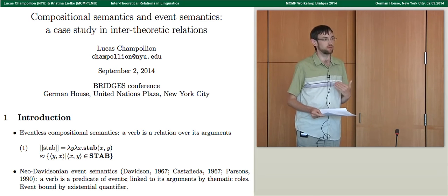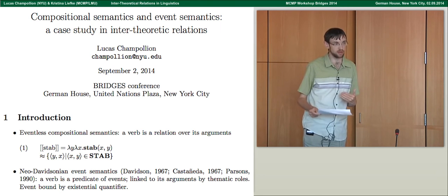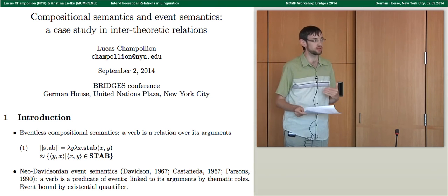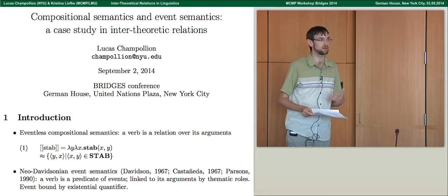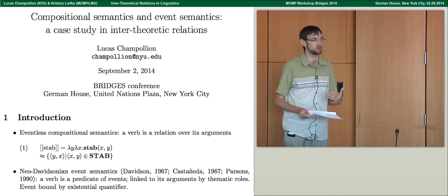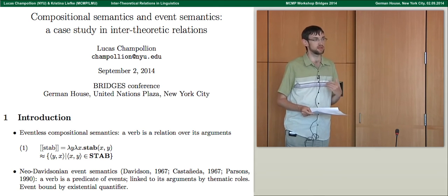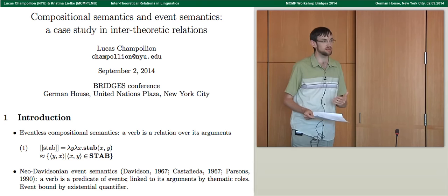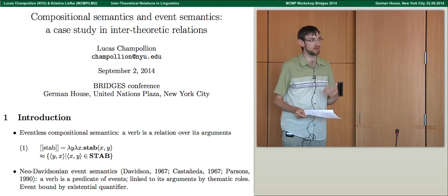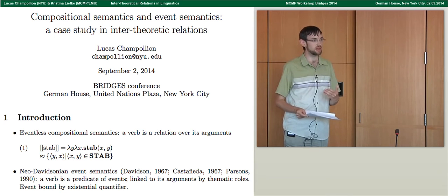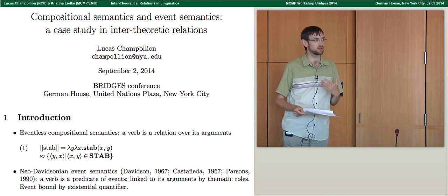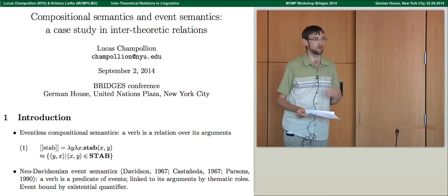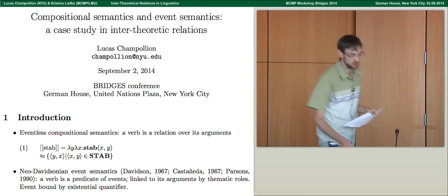Event semantics concerns itself with the idea that the meanings of verbs involve reference to events. For example, for a transitive verb like stab, whereas Montague semantics proper represents its meaning as a set of pairs of a stabber and a stabee, event semantics adds events into the mix. The verb stab might denote the property of being a stabbing event, or the relation holding between a stabber, stabee, and a stabbing event, or intermediate forms.